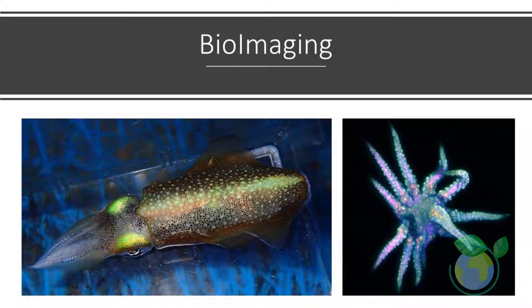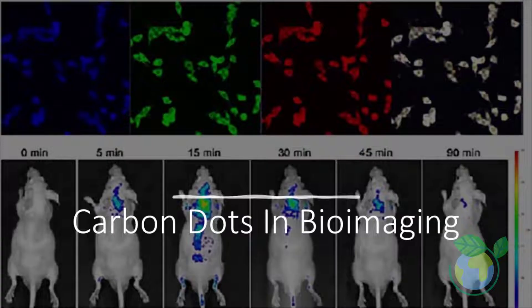Bioimaging aims to interfere as little as possible with life processes. Moreover, it is often used to gain information on the three-dimensional structure of the observed specimen from the outside, without physical interference. In a broader sense, bioimaging also includes methods visualizing biological material that has been fixed for observation.